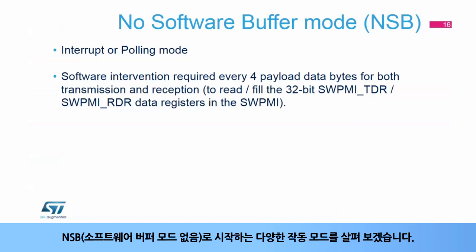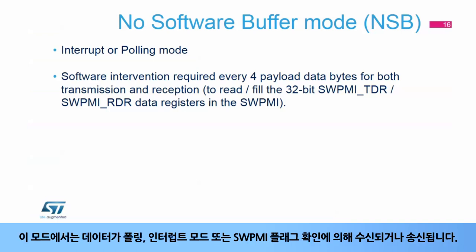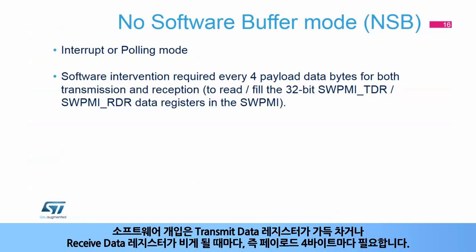Let's look at the different operating modes, starting with no software buffer mode, or NSB. In this mode, data is received and transmitted in polling or interrupt mode by checking the SWPMI flags. Software intervention is required each time the received data register becomes full or when the transmit data register becomes empty — that is to say, every four data bytes in the payload.